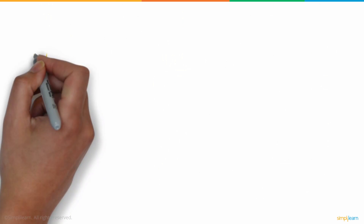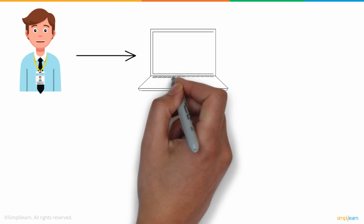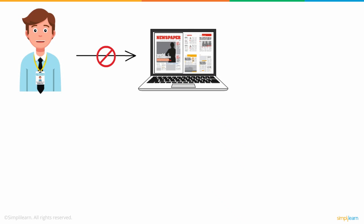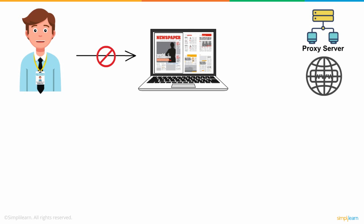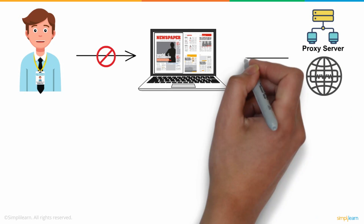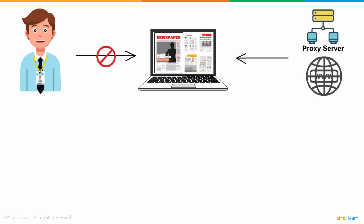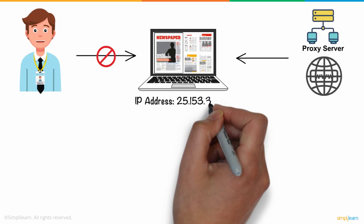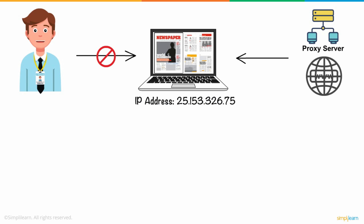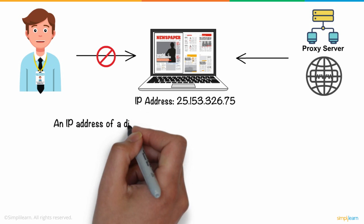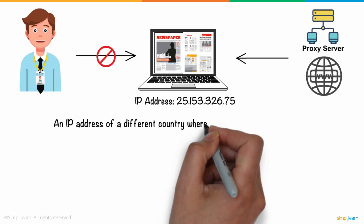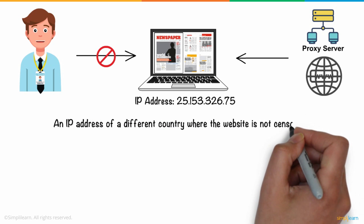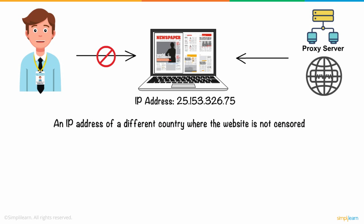When Jonathan wasn't able to access the news website, he connected his system to a global proxy server. Once connected, the proxy server assigns a new IP address to Jonathan's system — an IP address of a different country where the website is not censored.